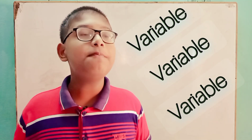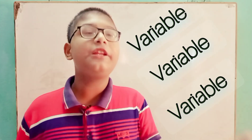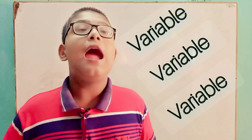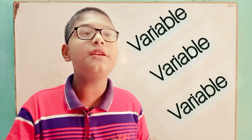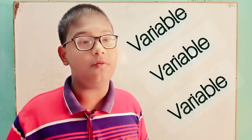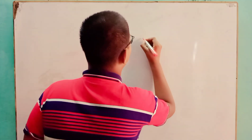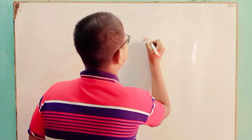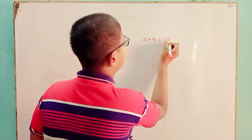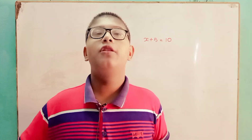First off, variable. In simple words, a variable is a quantity that can be changed and is not fixed. In mathematics, a variable is a symbol for a number where the value is not known. For example, x plus 5 equals 10. Here, x is a variable.